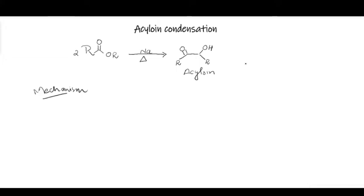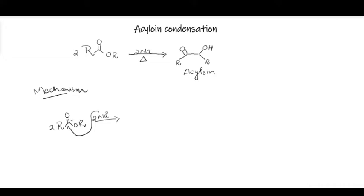Because we are dealing with molten sodium, sodium being an electropositive metal can provide an electron to the ester molecule. Because there are two ester molecules condensing together, two sodium atoms will provide one electron each to these ester molecules. Sodium will be in zero oxidation state, that is in metallic form. This electron will be provided to the carbonyl carbon because that is electrophilic in nature, and this single electron transfer to the carbonyl carbon will push the pi electrons towards the oxygen, giving rise to a radical anion.